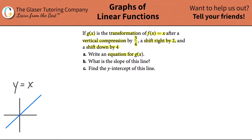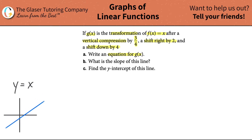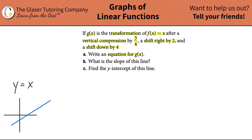A nice line drawn at basically a 45 degree angle. Now what we have to do is take this particular line and do a bunch of transformations. We have to vertically compress it by 3 quarters — kind of make it flatter. So maybe it's a little flatter; it's not a 45 degree angle anymore. And then we have to shift the graph to the right by 2, and then shift it down 4.